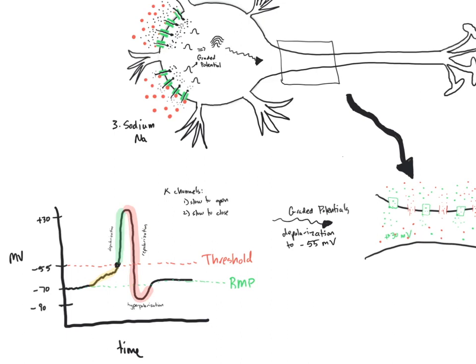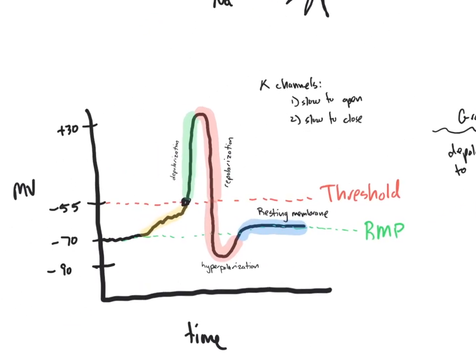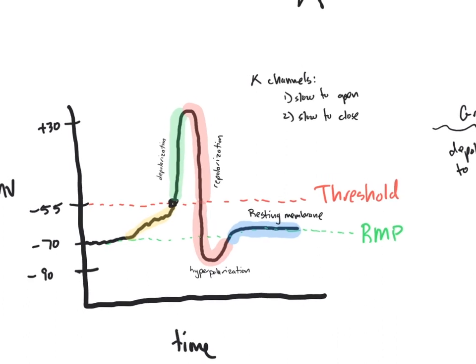Because the potassium channels were slow to close, we see this hyperpolarization phenomenon. We go from a repolarizing state to a hyperpolarizing state. Then our third channels — the leak channels, which we'll draw in blue — are going to allow us to get back to resting membrane potential. Now I want to zoom in on this graph because I want to talk about two periods here: relative refractory and absolute refractory.